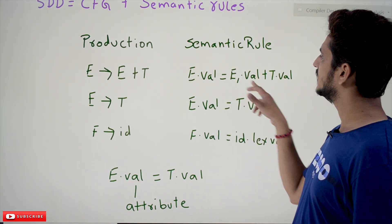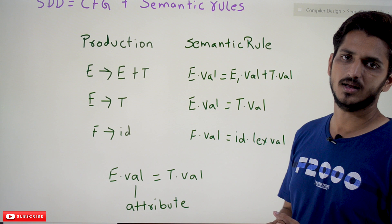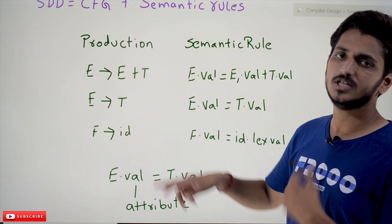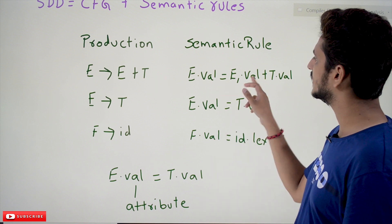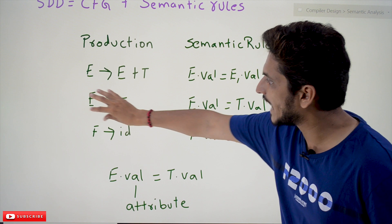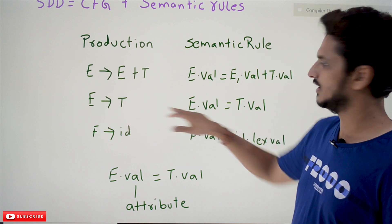During this you need to do some action. That's the semantic condition. It is going to say E.val equals E1.val plus T.val. We are using E1 to separate the leftmost E and rightmost E. E.val equals E1, whatever action you have to take for E tends to T, that is the semantic condition.